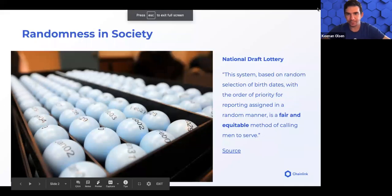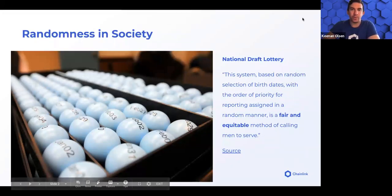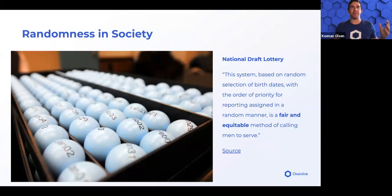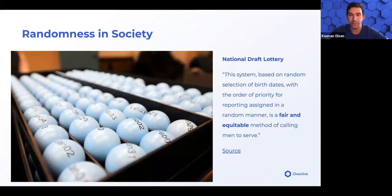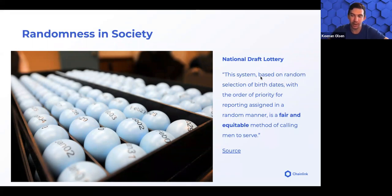Randomness in society: if we think about all the random things we use in day-to-day life, national draft lotteries and any sort of gambling immediately jump out. There are wide implications for needing random functions for each of these. The system might be based on a random selection of birth dates — whether it's a draft for a war or just picking a Powerball winner. Here in Denver, Colorado, our government is looking to use Ethereum and Web3 for its next lottery games, putting the Powerball lottery onto the blockchain. What we'll need is some way to verifiably and randomly prove this.